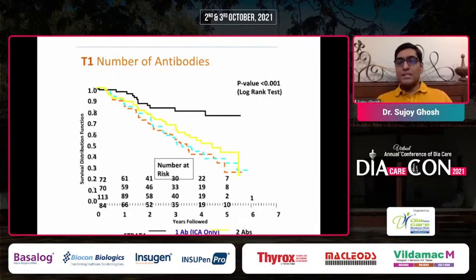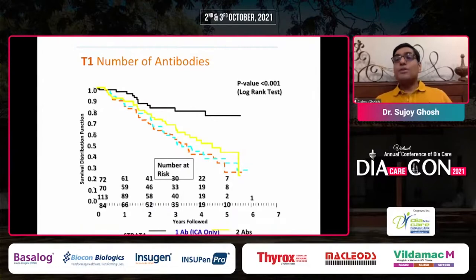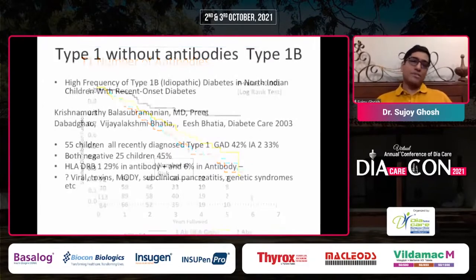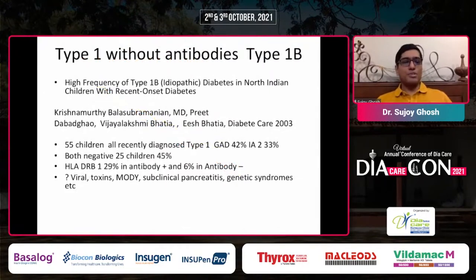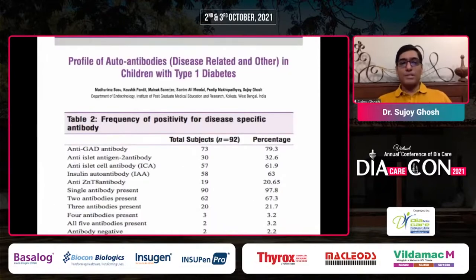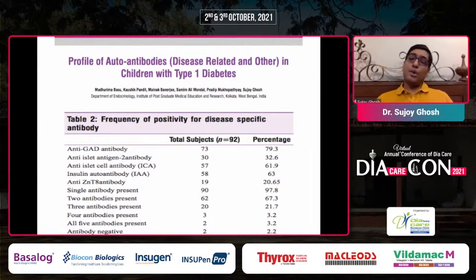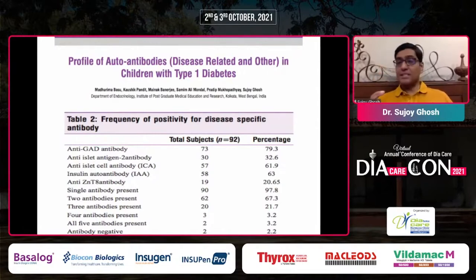If you look at the antibodies, depending on how many antibodies you're testing and how long after the diagnosis of type 1 you're testing, the antibody numbers may decline. Testing only 2 antibodies might not give you positivity. Dr. Ish Bhatia's group from SGPGI Lucknow suggests both can be negative in about 45% of cases. In our population in Kolkata, if testing all antibodies, total negativity is very low — around 2% — but even with all negative antibodies, it can still be type 1 diabetes.